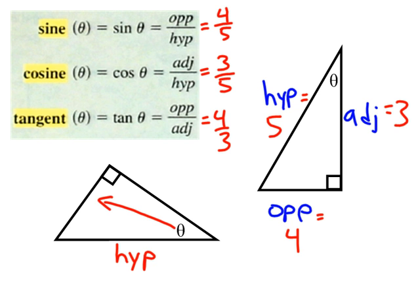We should still be able to look at theta and say, okay, across from theta there is the opposite, and adjacent to the theta would be right here. So don't let it throw you if you see a triangle that's oriented differently.